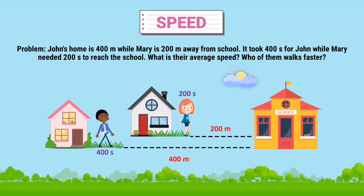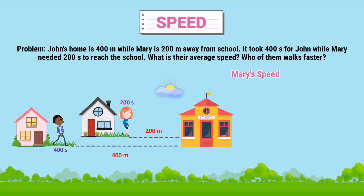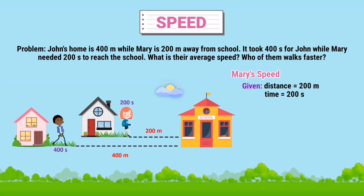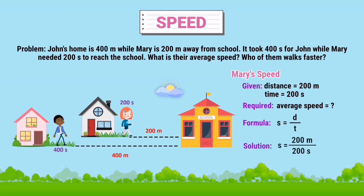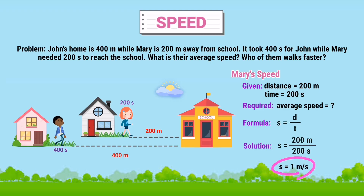And who of them walks faster? Solving for Mary's speed, we have the given values: distance equals 200 meters and time equals 200 seconds. What is required is the average speed, and the formula is S equals D over T. We substitute all the values: S equals 200 meters divided by 200 seconds. The answer is 1, and we simply copy the units. As a result, Mary's average speed is 1 meter per second.